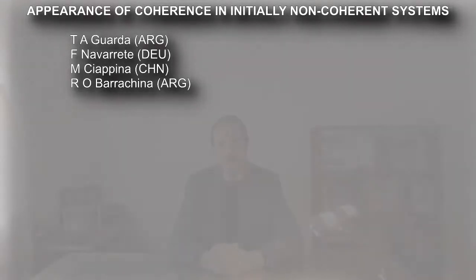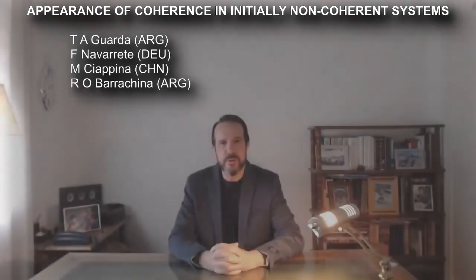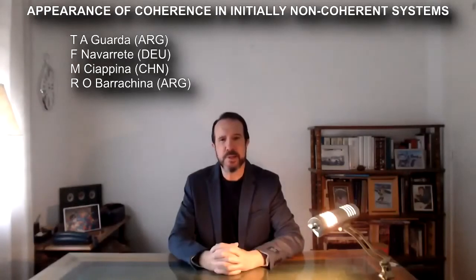The appearance of coherence in initially non-coherent systems is one of the most interesting and least understood effects of quantum physics. Let us start by considering the standard Feynman experiment where a two-slit arrangement is bombarded by a beam of particles. We are assuming that these particles are thrown one by one, like in most accelerators. Let us first consider a situation where each particle in the beam can be represented by the same plane wave of wavelength lambda.